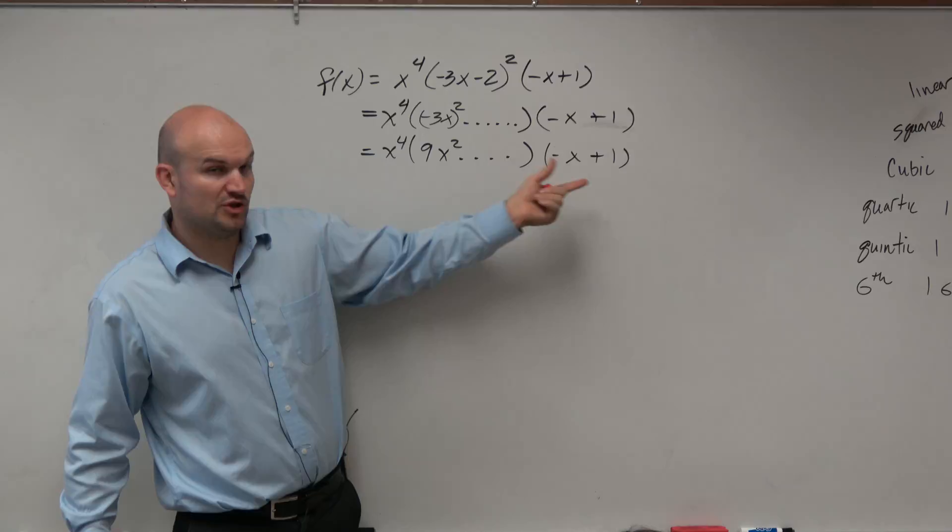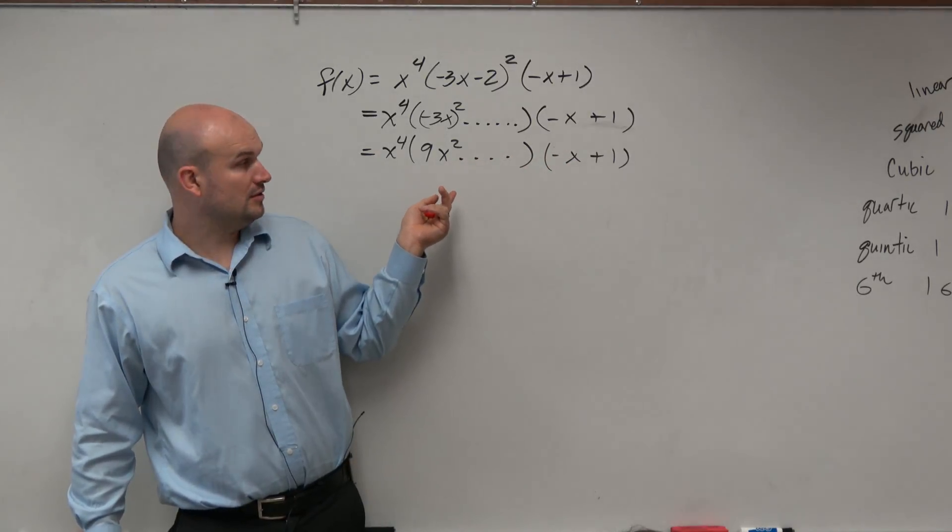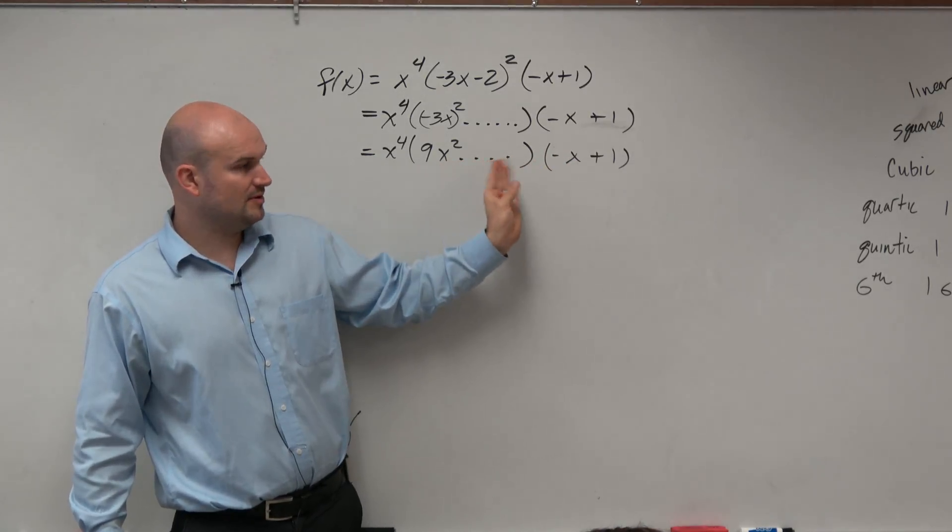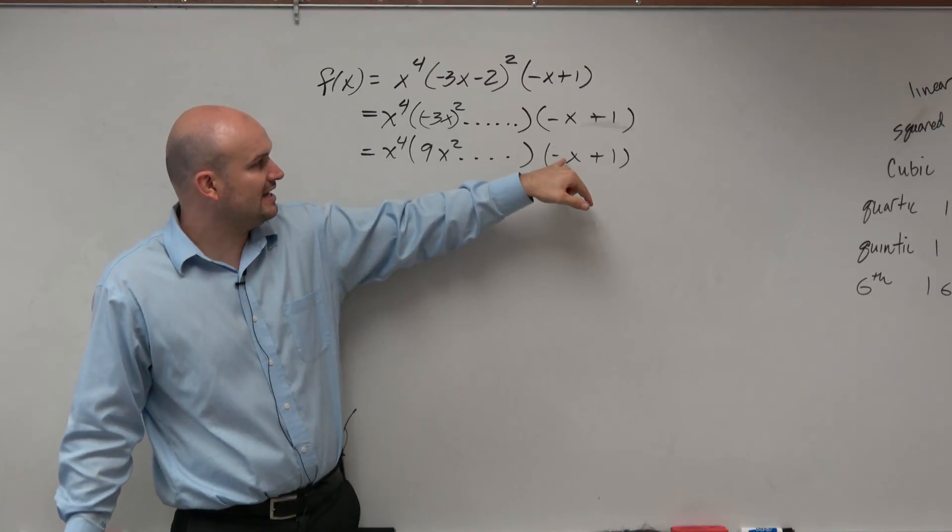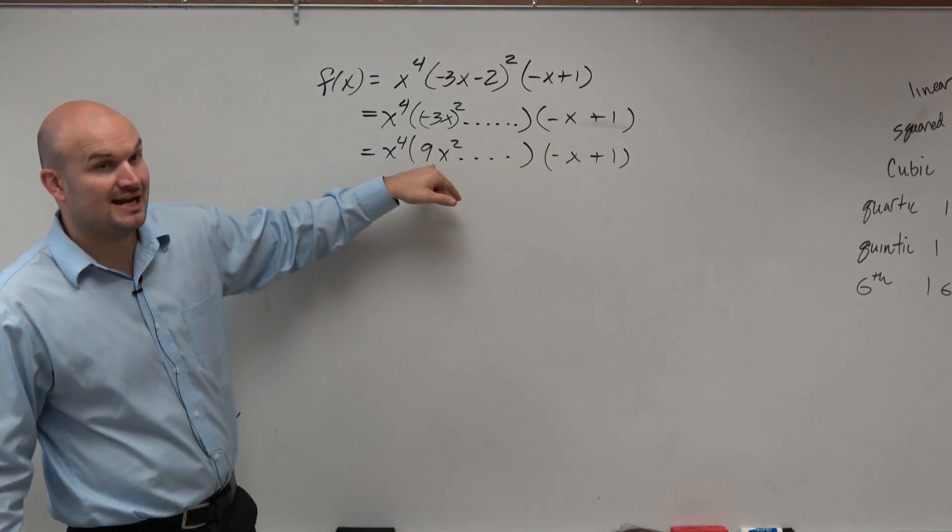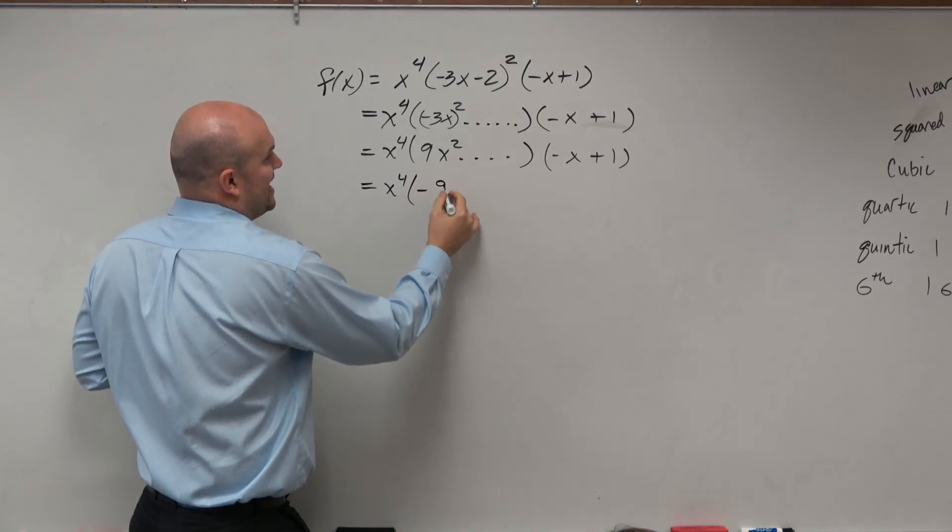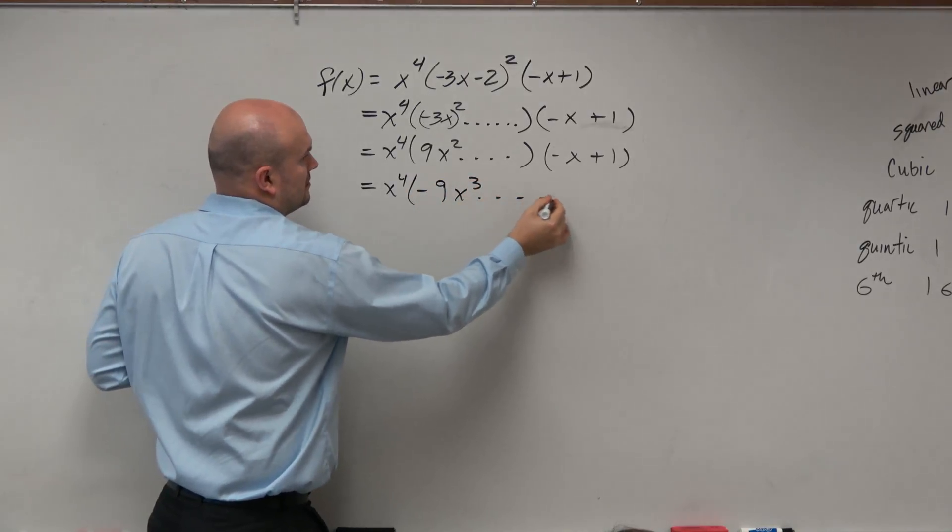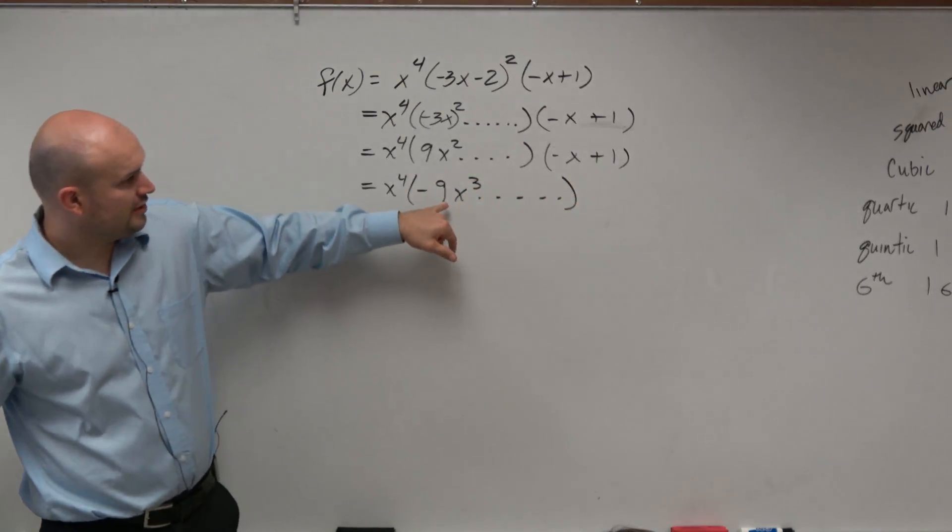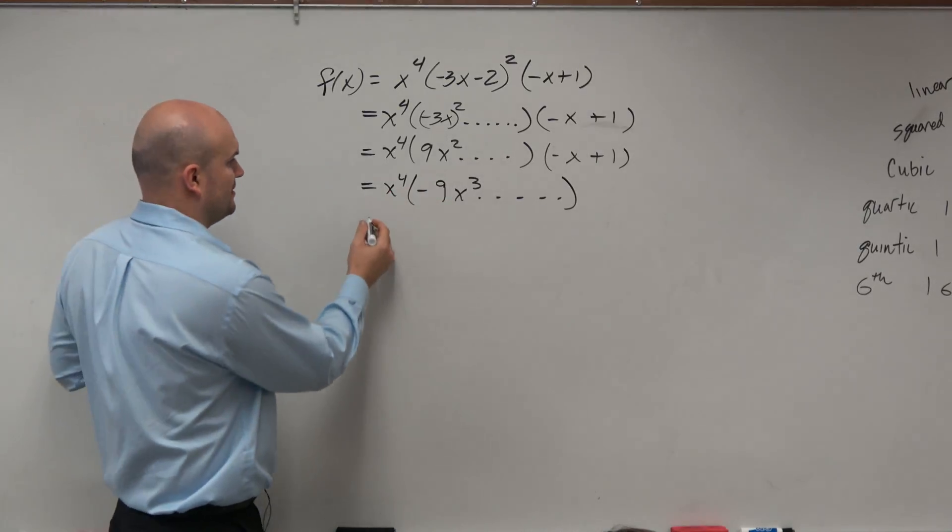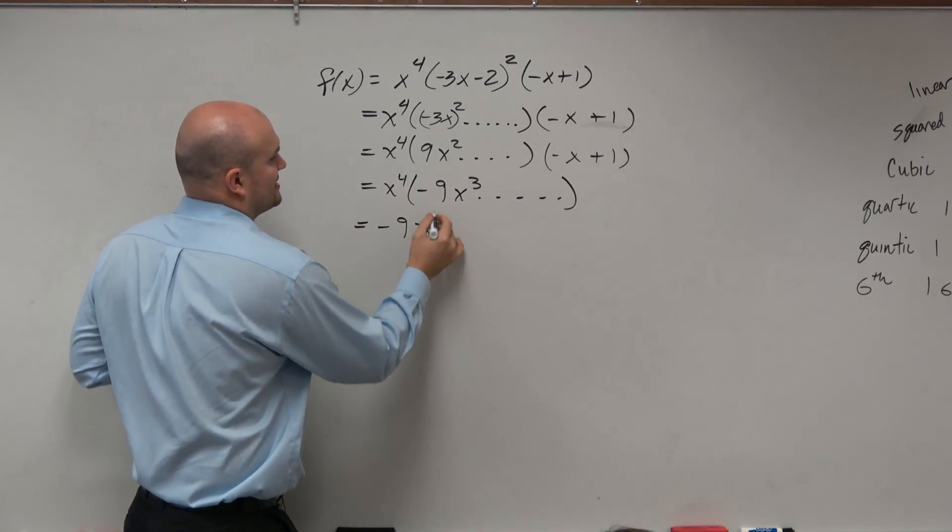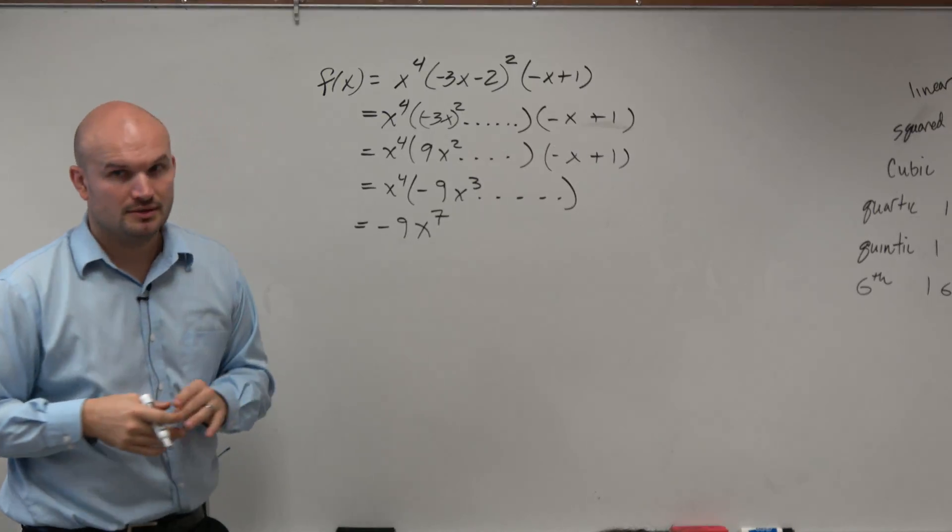So now, if we were to multiply these two out, right, we don't know what the rest of it is. But we know that the highest power we're going to get is negative x times 9x squared, which would give me a negative 9x cubed. And then if we were to multiply these two together, we'd have a negative 9x to the seventh, all right?